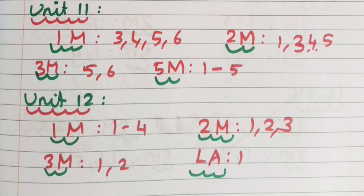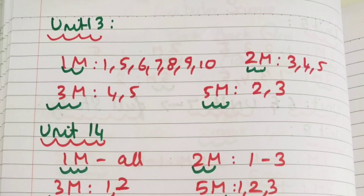Unit 12: 1 mark — 4. 2 mark very short answer — 1, 2, 3. 3 mark — 1 in length. 5 mark is 1 in length.